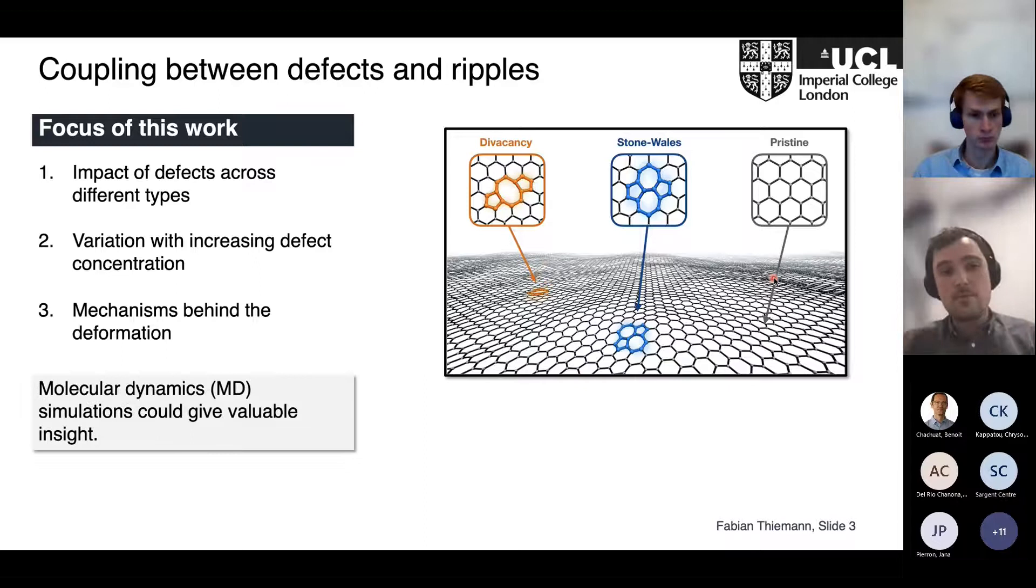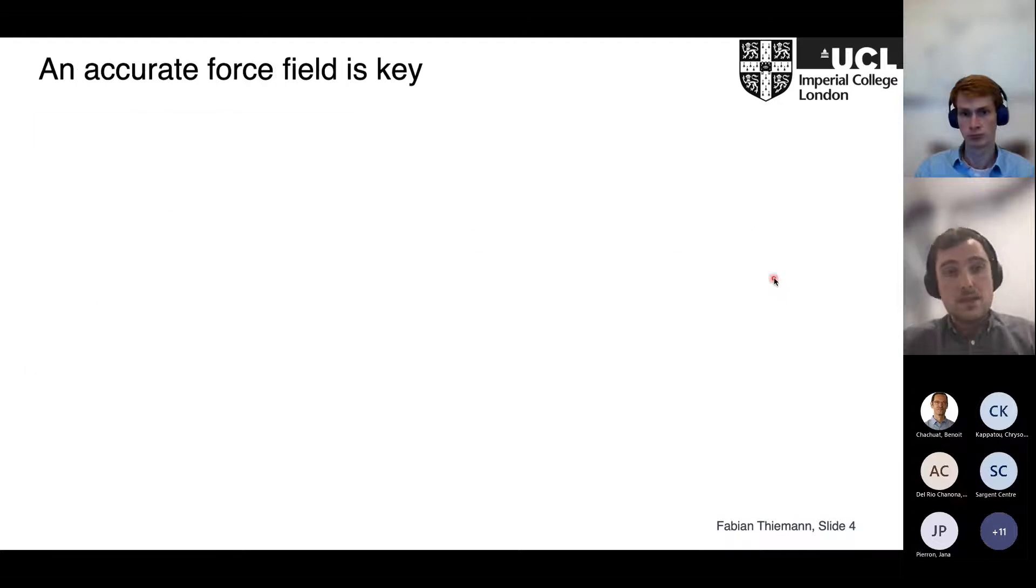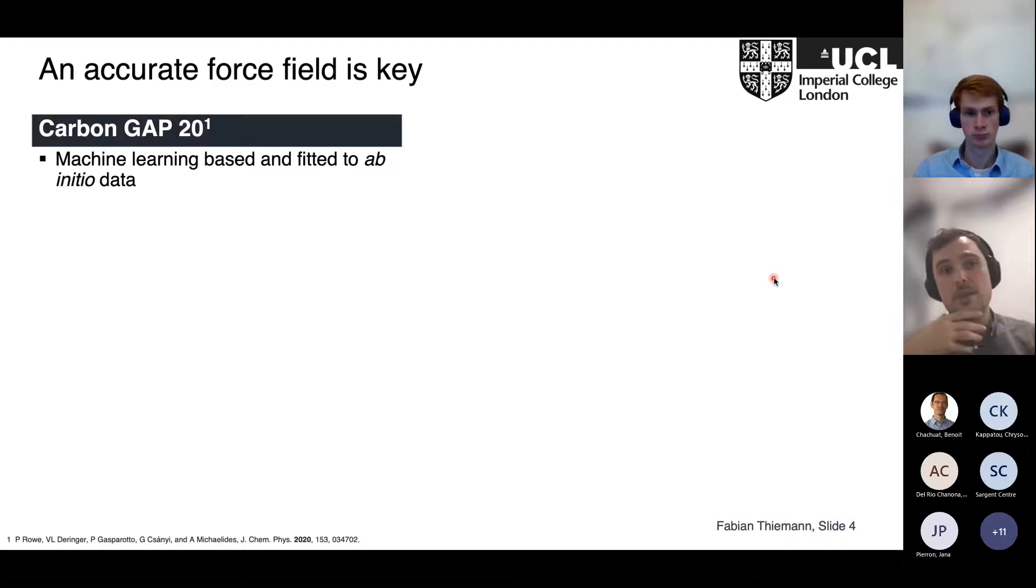To do all of this, we employ molecular dynamics simulations. The reason for this is that for this specific problem, where we want to understand how defects change the morphology on a nanoscale, we can basically observe that at our computer screen. The bottleneck with any methodology is, in the case of molecular dynamics, the force field—basically the description of the inter-atomic interactions. What we employ here is a machine learning-based force field. It sounds fancy; it was developed in our group about a year ago.